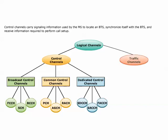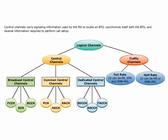Traffic channels carry either speech or data. There are two types of traffic channels: full rate and half rate. Enhanced full rate, EFR, is another version of the speech codec full rate that provides more quality. AMR is a new speech codec type which adapts the speech codec rate and channel coding according to the radio environment, making the channel more robust and error-free.